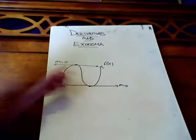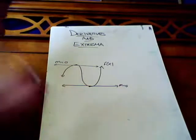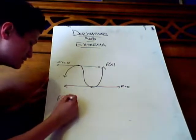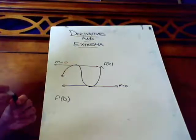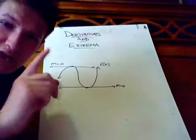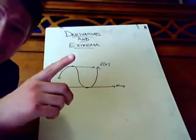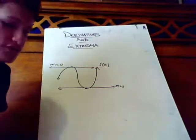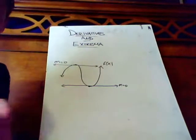Define these points. Define these two points. You take, you set f prime of x to zero. And that should give you those points. Take note of that. The points of extrema, the x values, are equivalent to the derivative of the function equal to zero. It's called the critical points.